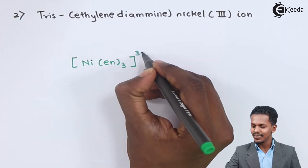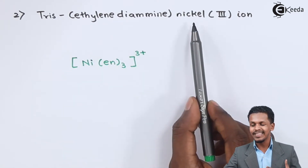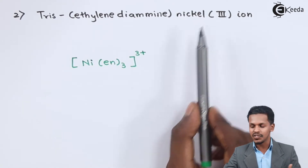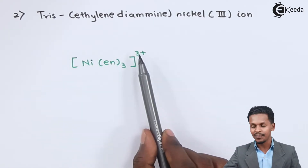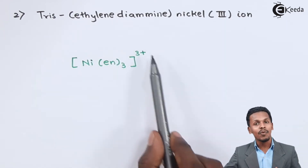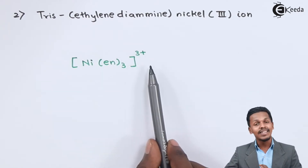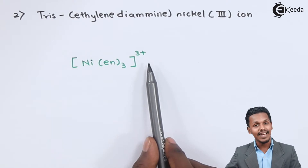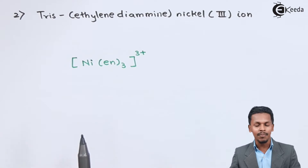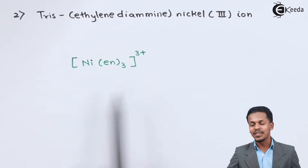Nickel has an oxidation state of 3, and ethylenediamine is a neutral ligand, so the charge on the complex equals the oxidation number of the central metal atom, which is 3 plus. Since it ends with 'ion,' there is a charge on this complex. It has no primary entity on either side, so this is just a tris(ethylenediamine)nickel(3) ion — not a complete compound — and the formula is [Ni(en)₃]³⁺.